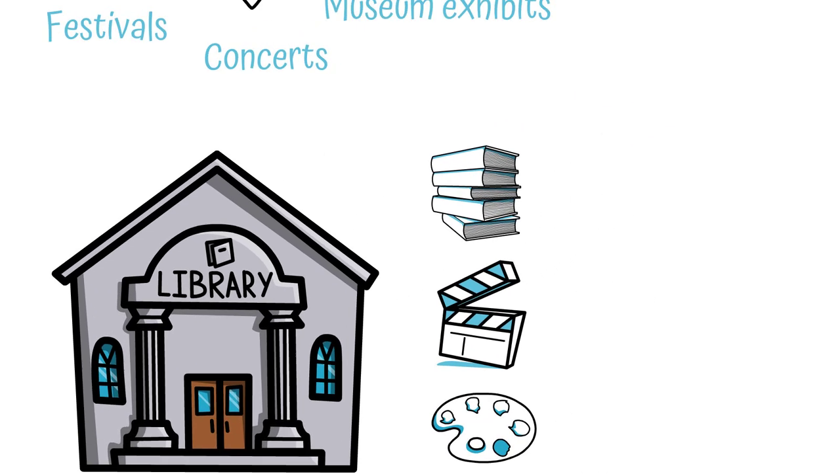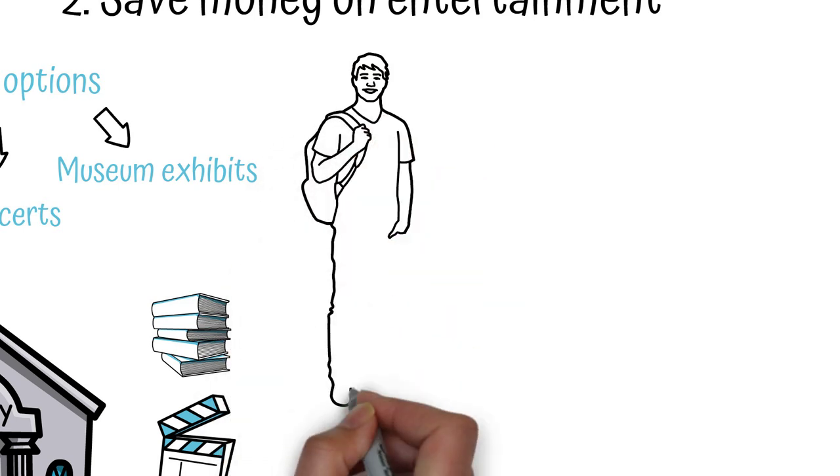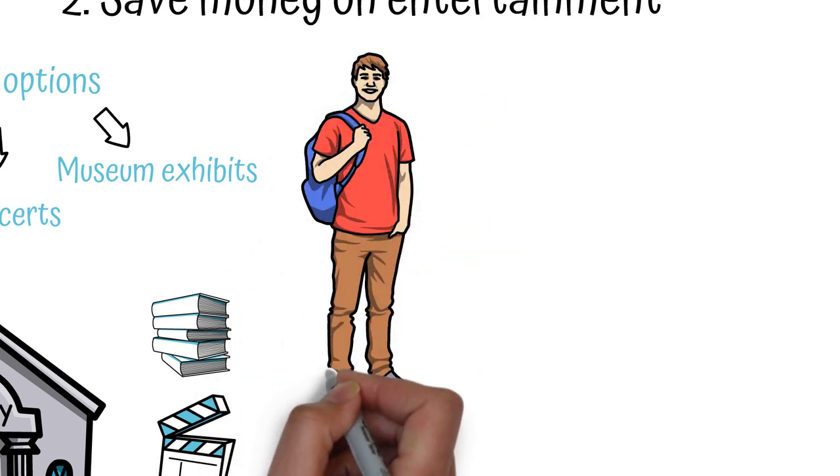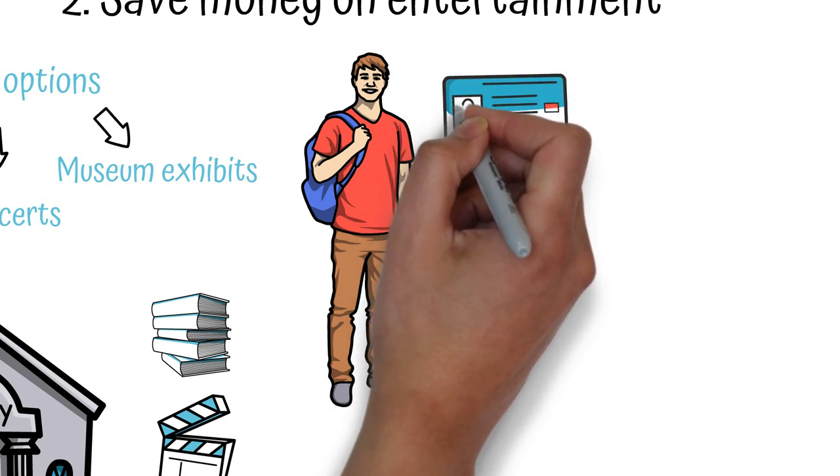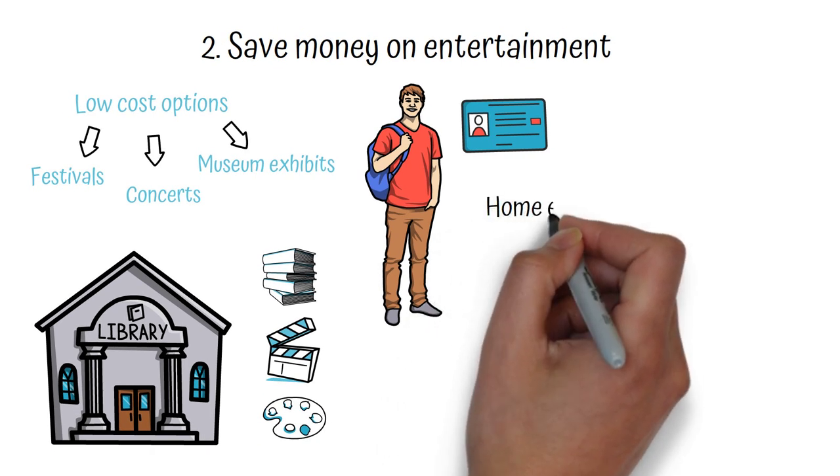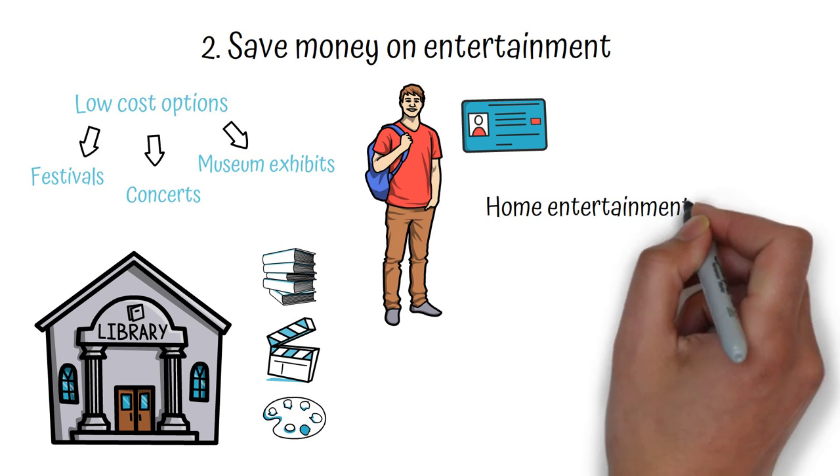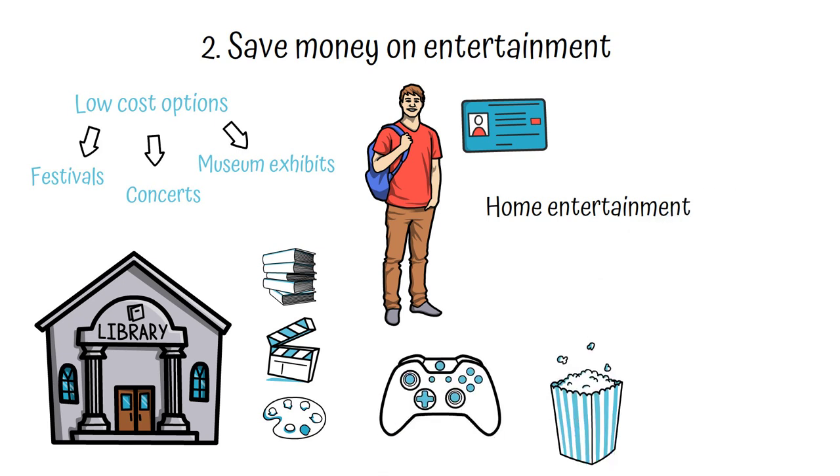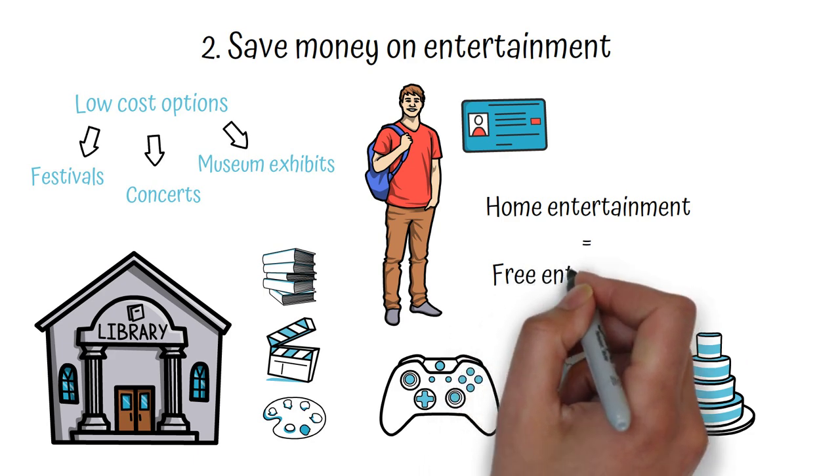Another way to save money on entertainment is to take advantage of discounts and deals. For example, if you're a student, you might be able to get discounted tickets to a concert or theater performance by presenting your student ID at the box office. You can also save money by hosting your own entertainment at home. Invite friends over for a game night, movie marathon, or cook-off. This can be a fun and budget-friendly way to spend time with friends and family.